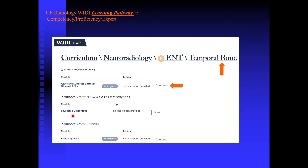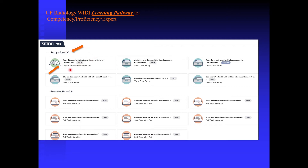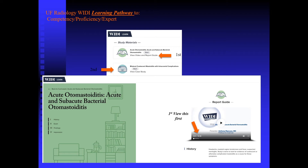The competencies under temporal bone include acute and subacute bacterial otomastoiditis, skull base osteomyelitis, and temporal bone trauma. So you choose what you want to study — in this case, acute and subacute osteomyelitis. The tool in curriculum mode then invites you to look at a basic video and what we call a report guide. The report guide is simply like a pre-flight checklist of all the observations that need to be made in that potential problem.